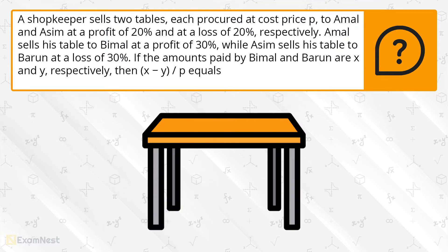A shopkeeper sells two tables, each procured at cost price P, to Amal and Aseem at a profit of 20% and at a loss of 20% respectively. Amal sells his table to Bimal at a profit of 30%, while Aseem sells his table to Barun at a loss of 30%. If the amounts paid by Bimal and Barun are X and Y respectively, then X minus Y over P equals...